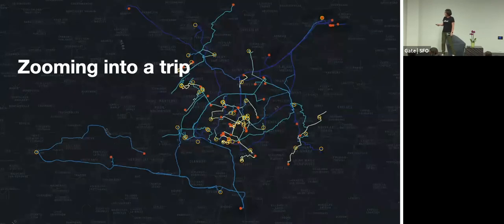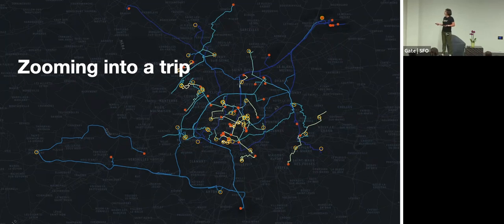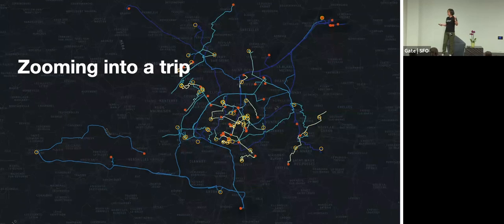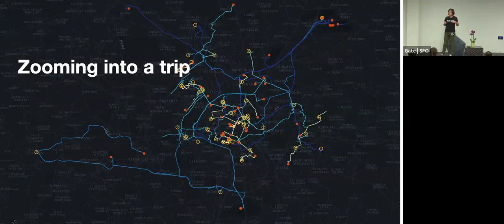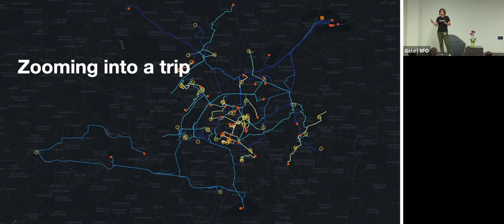And if we zoom into specific trips, then we have very rich geo data about them. So a trip literally can start at a time that the driver is driving around on the map and doing nothing. And then at the time they get a dispatch request and accept the request, we record the dispatch acceptance location. And then the driver goes to the rider location to pick up the rider.